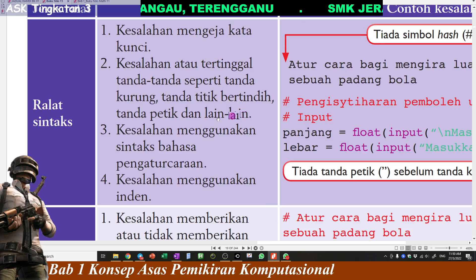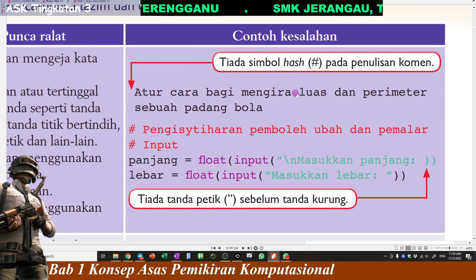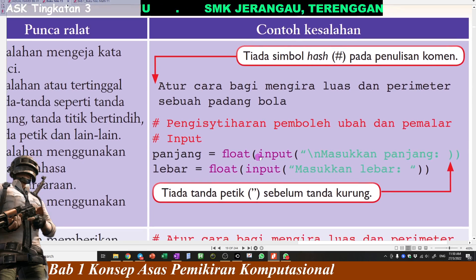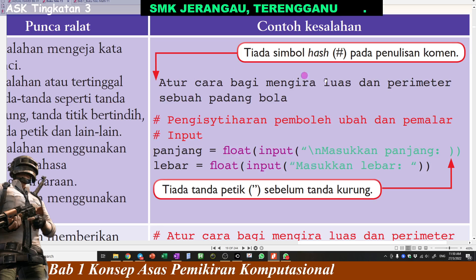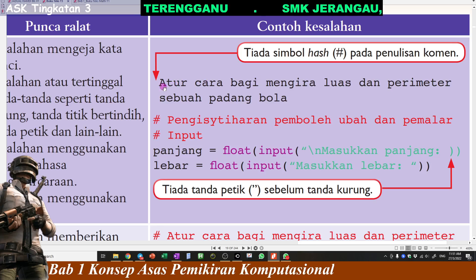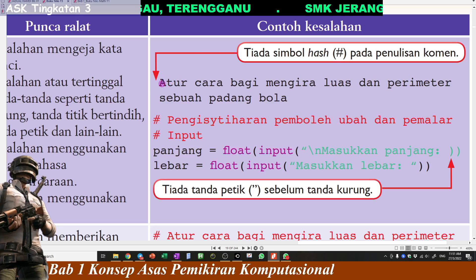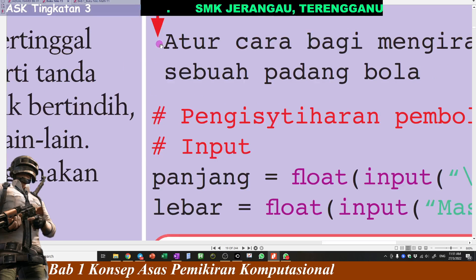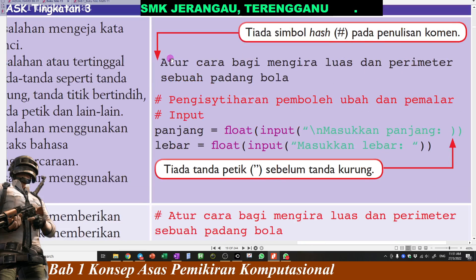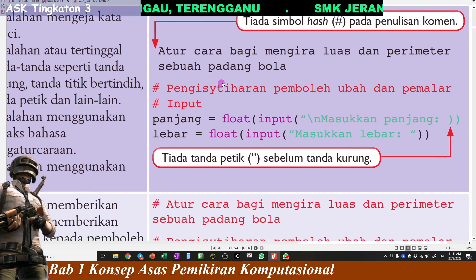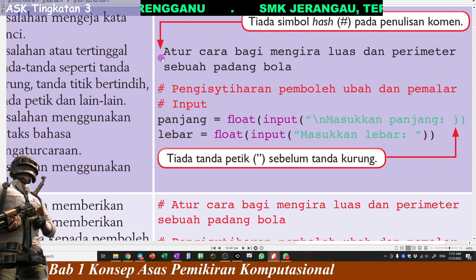Ralat sinteks ni, macam mana kita tahu dia ralat sinteks? Dia akan keluar error lah. Contohnya dalam kita punya coding nanti tu, dalam atur cara tu, di sini kita terlupa letak tanda macam ni, hashtag tu. Ini sebenarnya penulisan komen, ayat ni: atur cara bagi mengira luas dan perimeter sebuah padang bola. Maknanya ni adalah kita punya masalah besar kita kan. Bila terlupa letak tanda hashtag dalam software tu, dia akan keluar error lah.